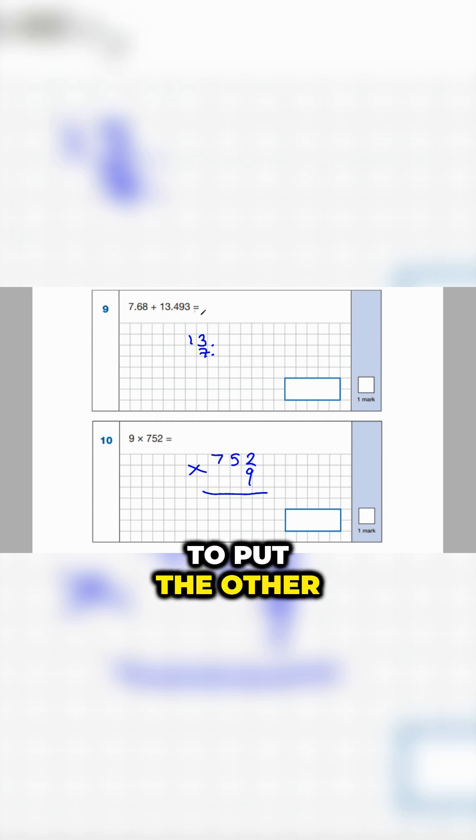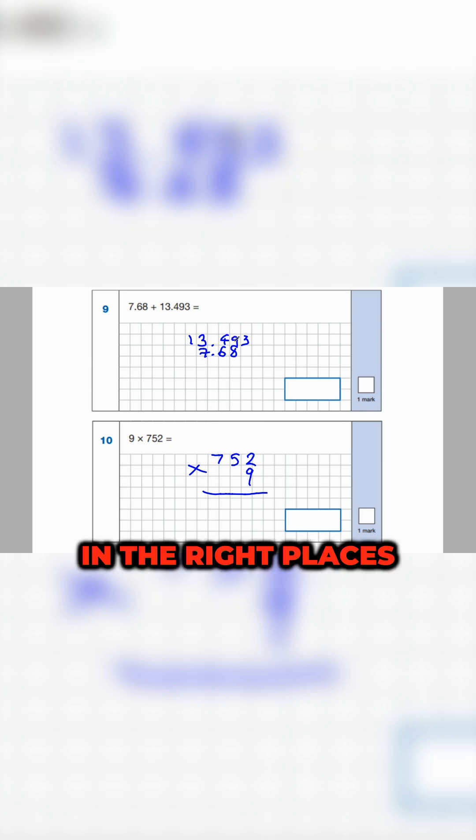Then we're going to put the other numbers in. So we've got 4, 9, and 3 over here, and we've got 6 and 8. Now I've got all the numbers in the right places. I must remember to add zero as my placeholder. That way, if this was subtraction, I wouldn't know to borrow.